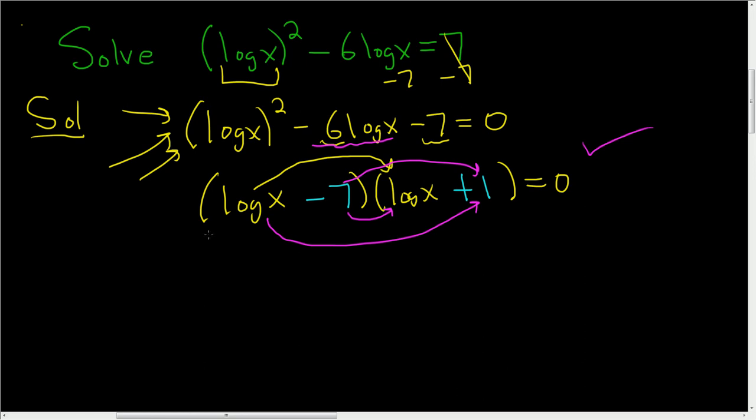We have a product that's equal to 0. So we set each factor equal to 0. So log x minus 7 is equal to 0 or log x plus 1 is equal to 0.